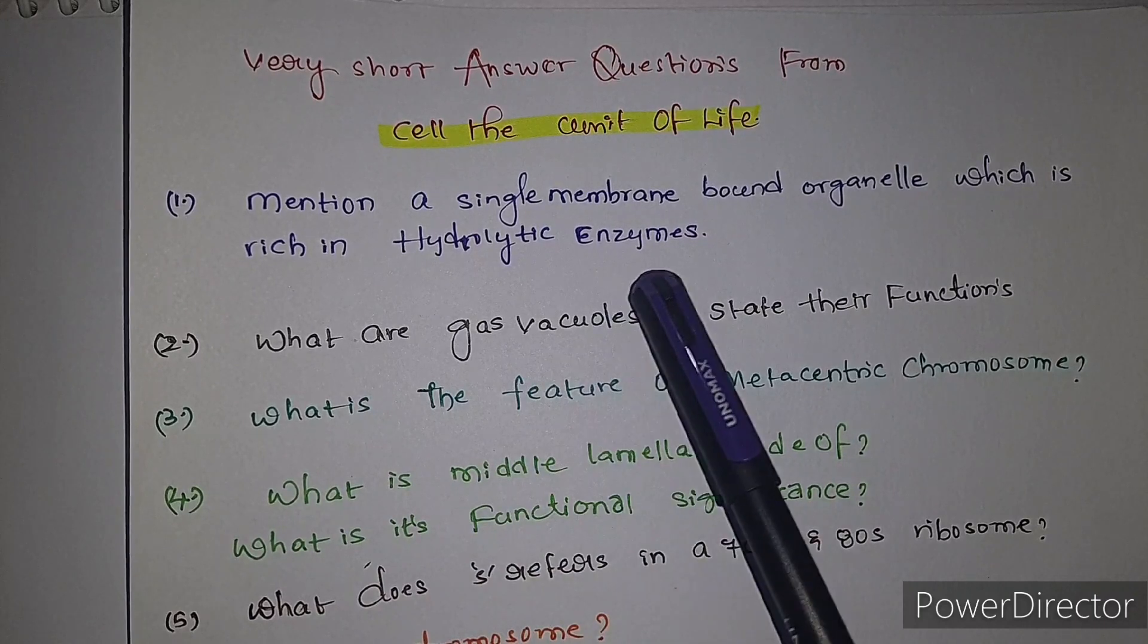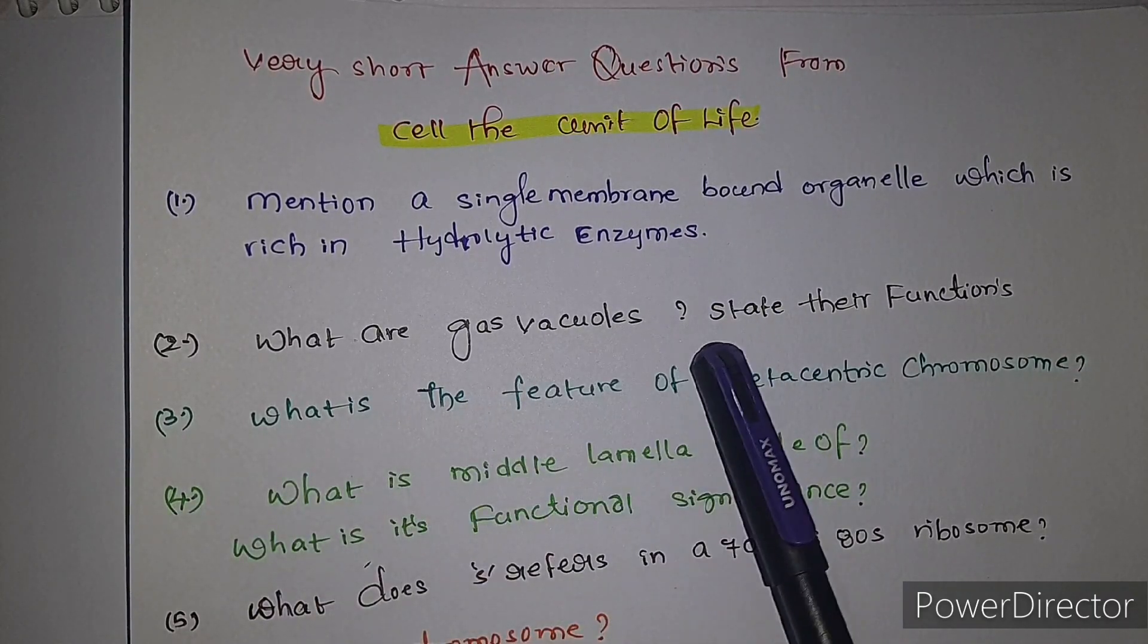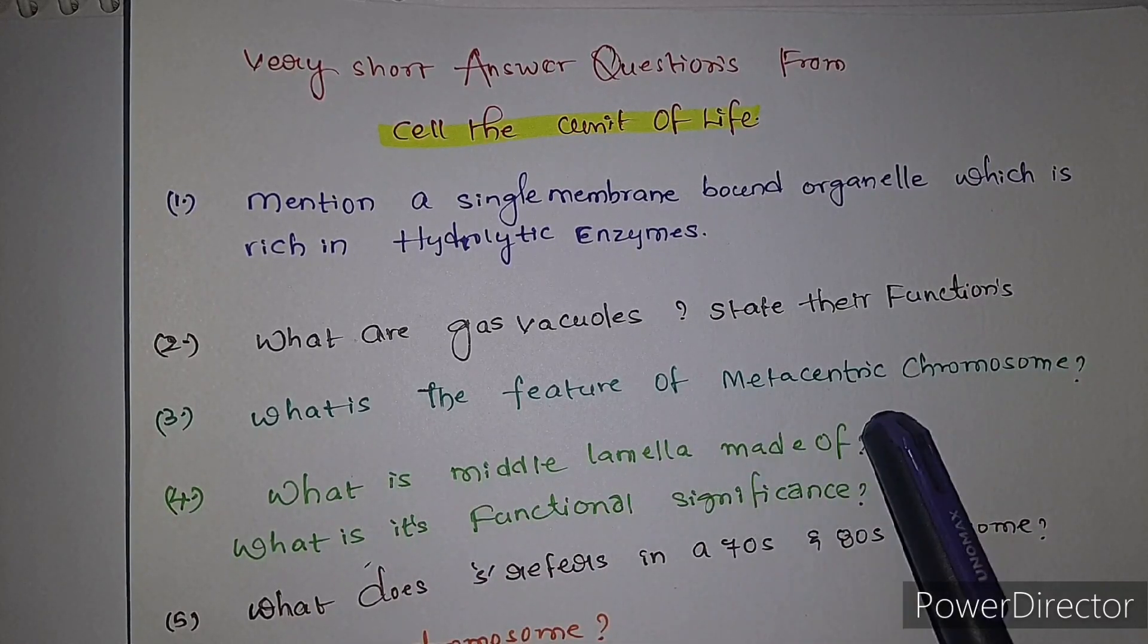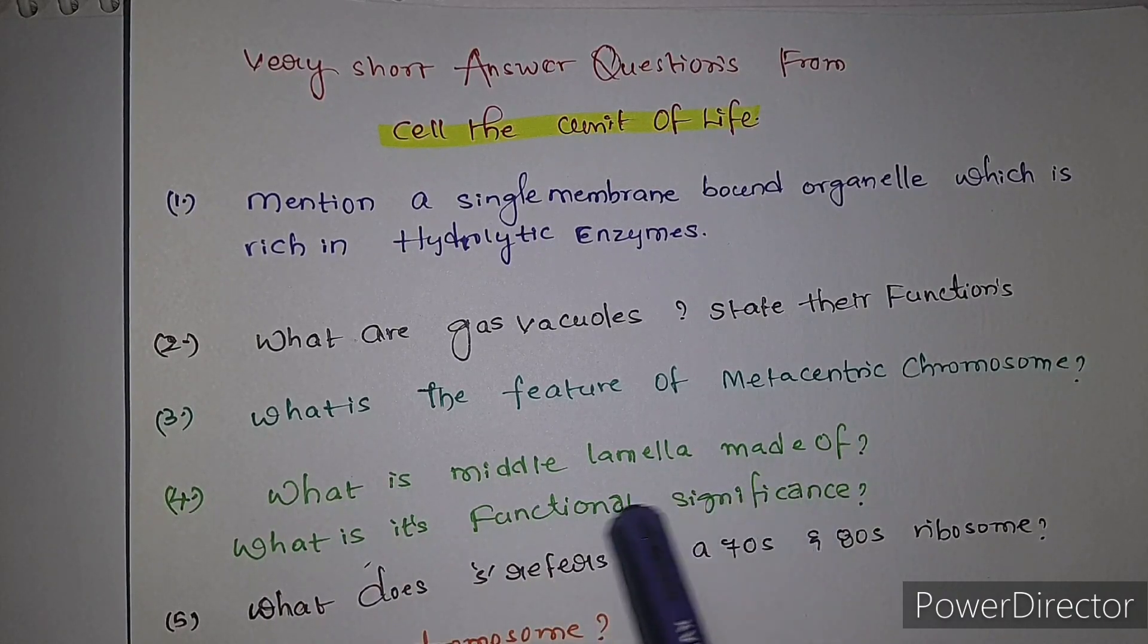Very short answer questions from cell, the unit of life. First question: mention a single membrane bound organelle which is rich in hydrolytic enzymes. Second question: what are gas vacuoles and state their functions.